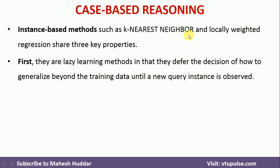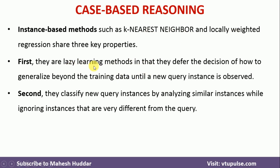I have discussed these two algorithms in detail in the previous videos; the link for those videos is given in the description below. The second property is they classify the new instance by analyzing similar instances — when it comes to k-nearest neighbor or locally weighted regression algorithms, they consider only the nearest examples to classify the new instance, not all the instances present in the training data.